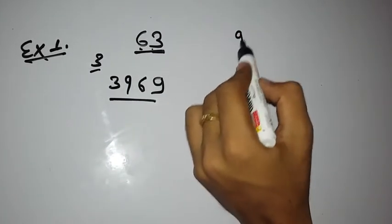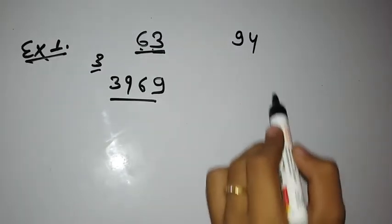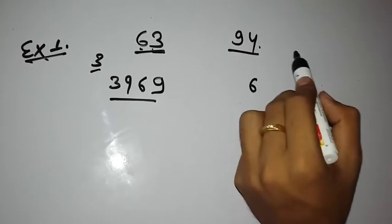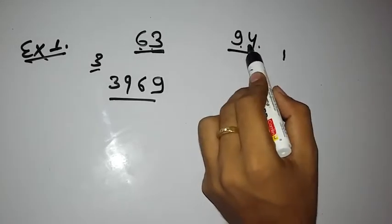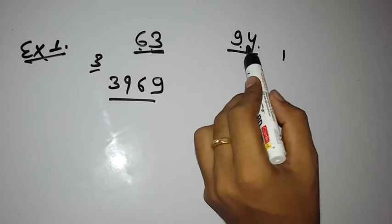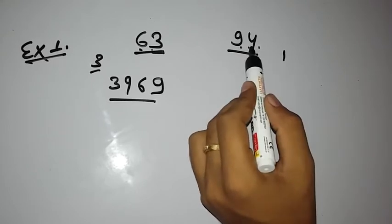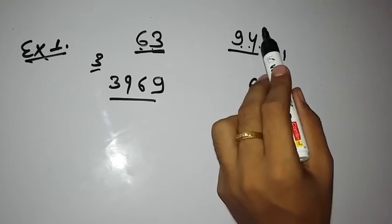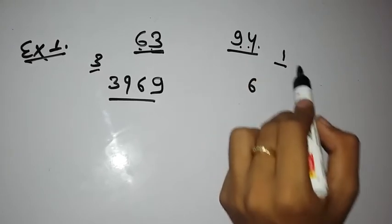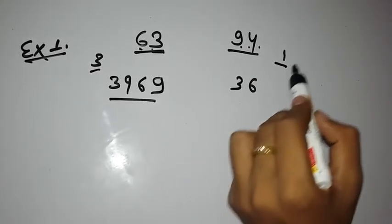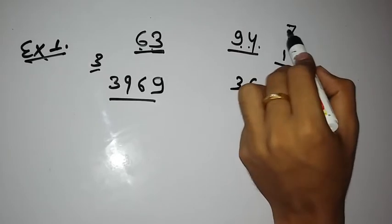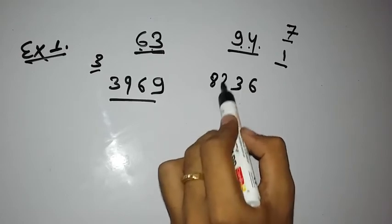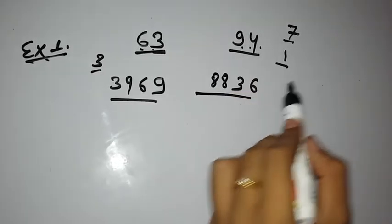Now let's take an example, 94. Follow the same thing. 4 square is 16, write 6 and 1 carry. Then 9 times 4 equals 36, double it to get 72. 72 plus 1 equals 73, write 3 and carry 7. 9 square is 81 plus 7 equals 88. So that's the square of 94.